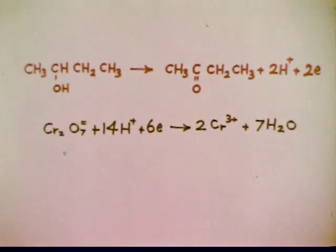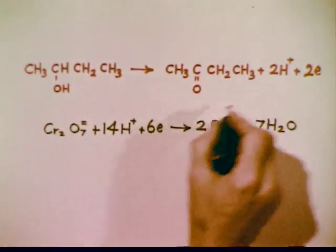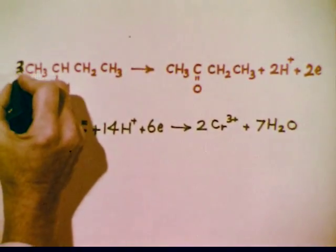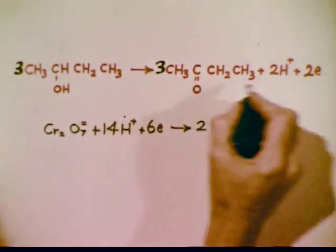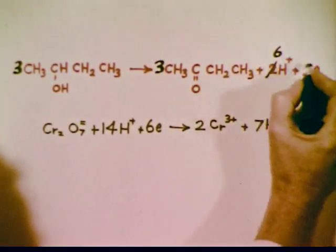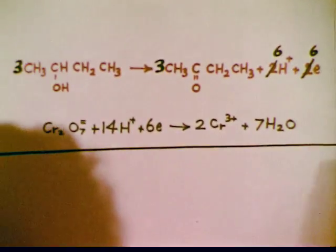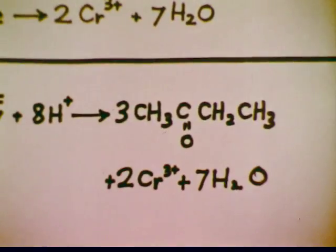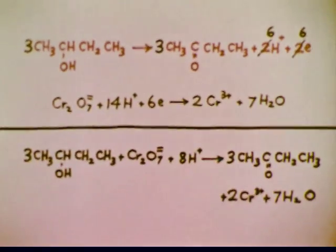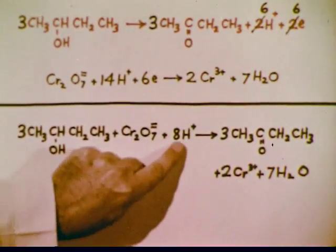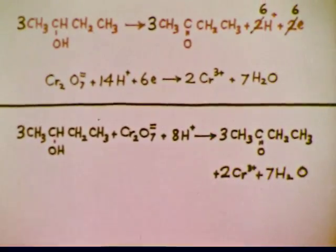These two half-reactions involve 6 electrons in one reaction and 2 electrons in the other. To make the equations equivalent in the number of electrons used, the top equation is multiplied by 3. Adding the half-reactions, we get the equation for the net reaction: butanol is oxidized to butanone, and dichromate in the presence of acid is reduced to chromic ion. With this, we can calculate the amounts of reagents that will be needed.